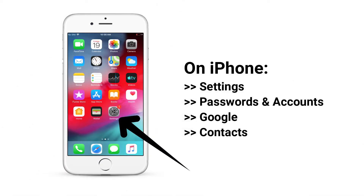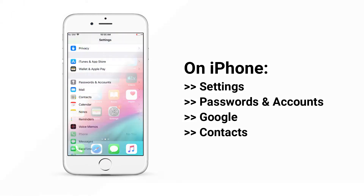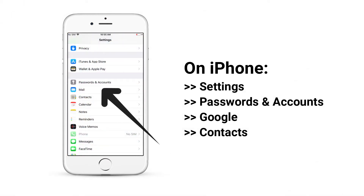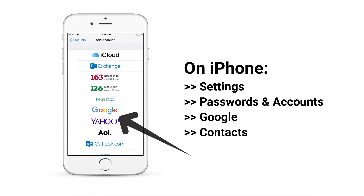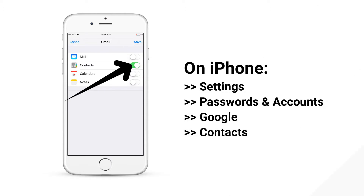On your iPhone, go to Settings and tap on Passwords and Accounts. Choose Google and sign in with the same Google account. Last, turn on Contacts and done.